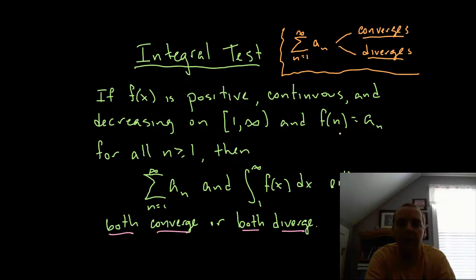And your continuous function matches the terms of your sequence that you're adding up to get your series at every integer value greater than one. Then what the integral test says is that the infinite series and the improper integral of f(x) from one to infinity either converge together or they diverge together.